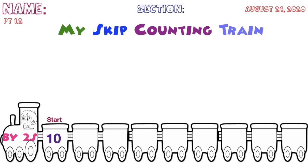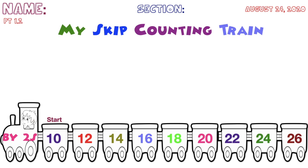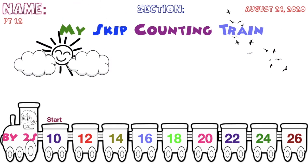For my example, I'm going to start at number 10 using skip counting by 2s. So: 10, 12, 14, 16, 18, 20, 22, 24, 26. After writing all the information needed, you may put some designs or drawings, whatever you want — or you may color your train.